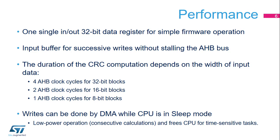The CRC data register can be accessed by word, right-aligned half-word, and right-aligned byte. The duration of the computation depends on the data width: 4 AHB clock cycles for 32-bit blocks, 2 AHB clock cycles for 16-bit blocks, and 1 AHB clock cycle for 8-bit blocks. The DMA controller can be used for writing to the CRC engine, offloading the CPU for other tasks and enabling back-to-back calculations for verifying code or data integrity.